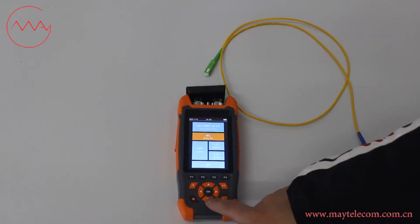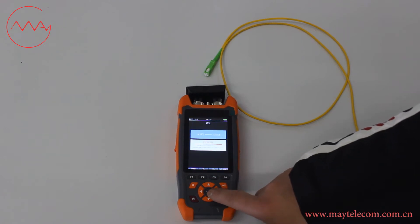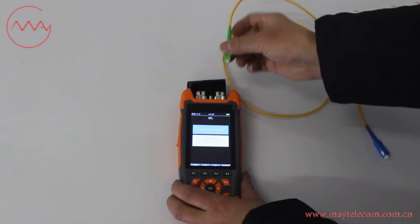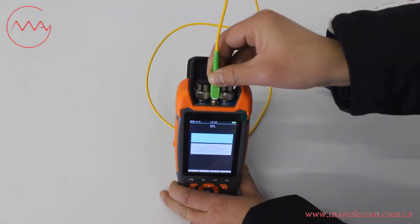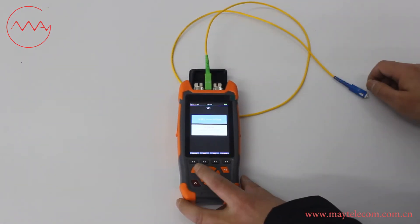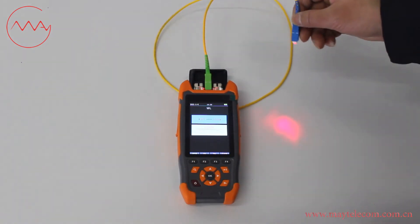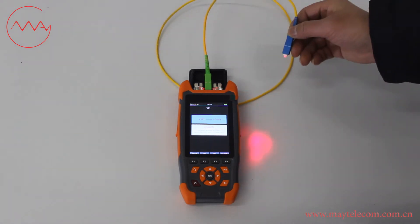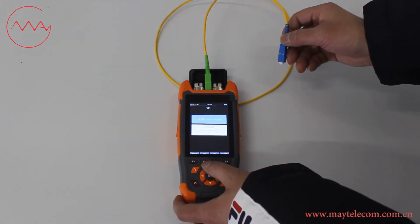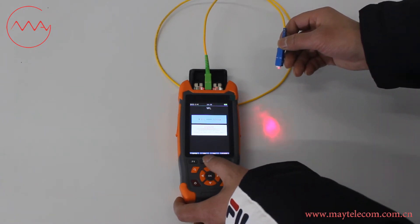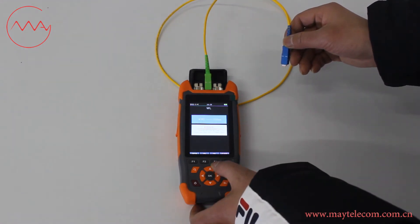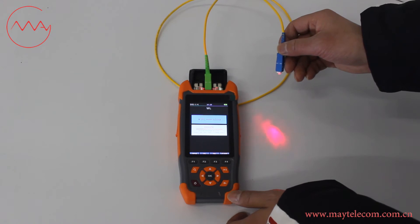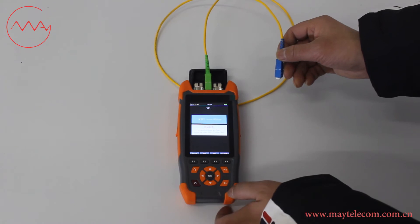Press F3 to select VFL and press OK to enter. Insert patch cord into VFL port. Press F1 to open VFL. Press F2 to change it into continuous wave mode. Press F2 again to change it into 2Hz flashlight mode. Press F4 to close VFL.